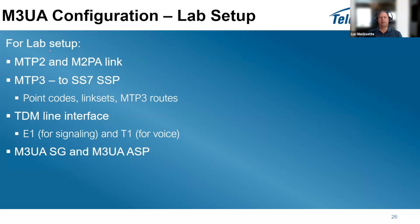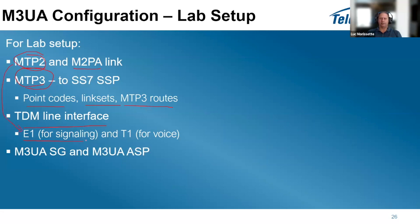The lab setup has one MTP2 and one M2PA link on the TDM side, both groomed into one MTP3 link set to the SS7 side. It has one point code, one MTP3 route toward TDM, and one MTP3 route towards M3UA. TDM line interfaces: one D1 link timeslot for MTP2 signaling, and T1 for voice traffic. One M3UA signaling gateway and one M3UA ASP are configured.